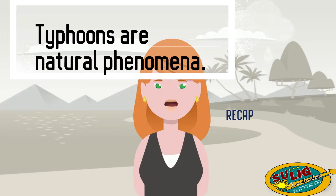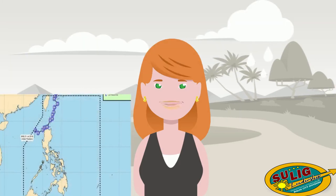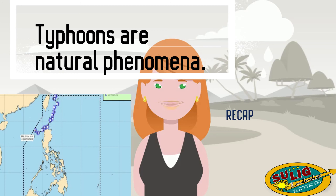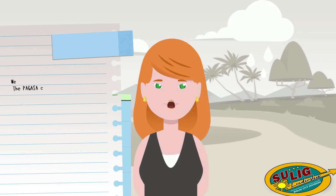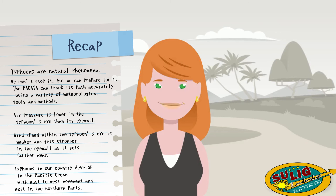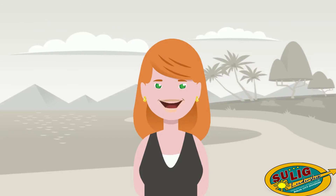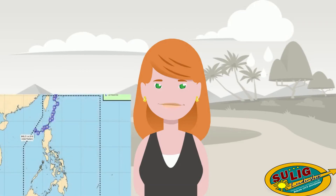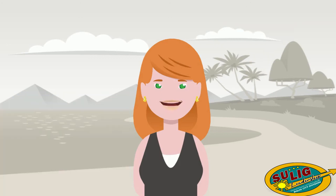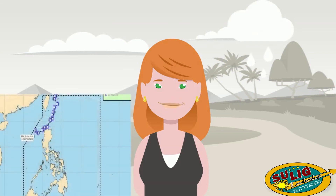Typhoons are natural phenomena. We can't stop them, but we can prepare for them. PAGASA can track typhoon paths accurately using a variety of meteorological tools and methods. Air pressure is lower in the typhoon's eye than in its eyewall. Wind speed within the typhoon's eye is weaker and gets stronger in the eyewall. Typhoons in our country develop in the Pacific Ocean with east-to-west movement and exit in the northern parts. It is important to identify and track the pathway of a typhoon — since we can't stop it, we need to prepare and minimize damages, and most of all, it will help us save lives. Remember, knowledge is power, and it's better to be ready than to be sorry.